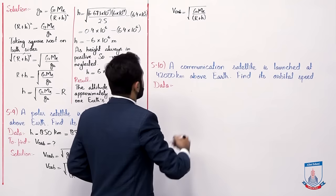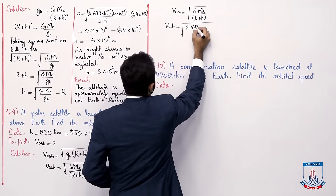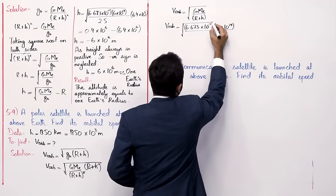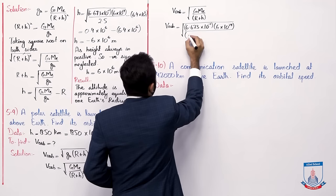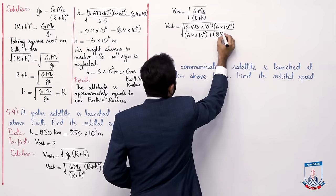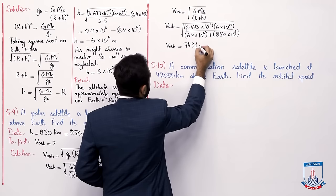Putting values in this formula: v_orbital equals under root of G, which is 6.673 multiplied by 10 to the power minus 11, times mass of Earth, 6 multiplied by 10 to the power 24 kilogram, divided by r plus h — that is 6.4 multiplied by 10 to the power 6 plus 850 multiplied by 10 to the power 3. Solving with a calculator, the final answer is 7,431 meter per second.